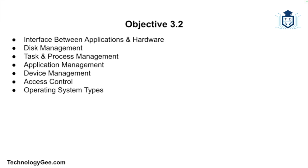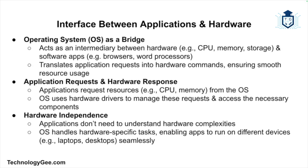We'll cover everything from how the operating system acts as an interface between applications and hardware to its responsibilities in disk management, task management, device management, and more. An operating system acts as a bridge between hardware — like your CPU, memory, and disk drives — and software applications like web browsers, word processors, and games. Think of it as a translator.